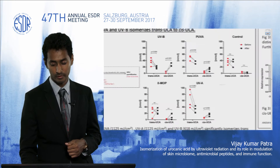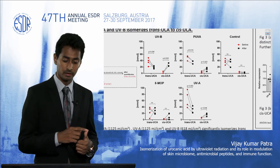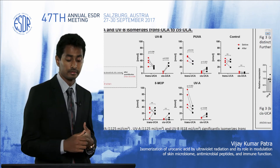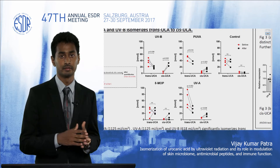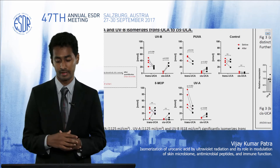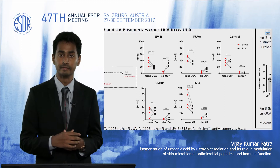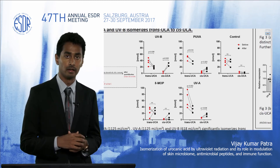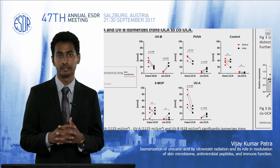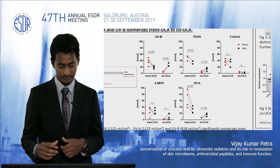We found that UVB, PUVA, as well as UVA can significantly isomerize trans-urocanic acid to cis-urocanic acid, whereas the control group didn't show any significant results, suggesting that these are the radiation sources that can isomerize trans-UCA.